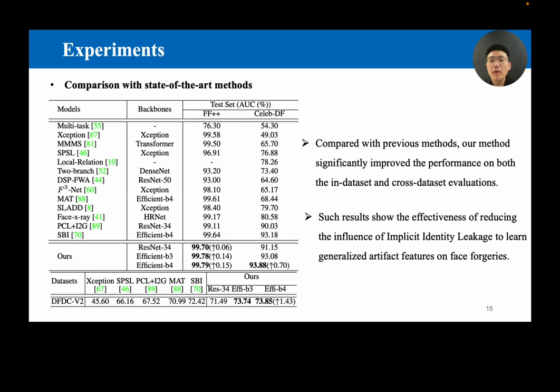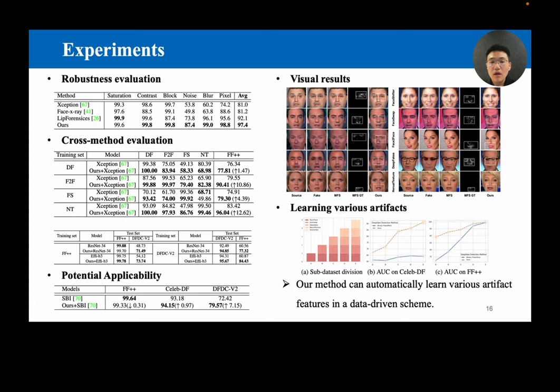We also compared our model with other deepfake detection methods. Results show that our method significantly improved the performance on both the in-dataset and cross-dataset evaluations. Such results show the effectiveness of reducing the influence of implicit identity leakage to learn generalized artifact features on face forgeries. Besides, we also evaluated our model for robustness evaluation, cross-method evaluation, and its potential applicability to combine with other methods as a plug-and-play module. Extensive experiments demonstrate the effectiveness of our proposed method.